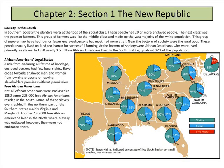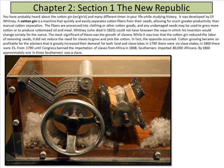The Cotton Gin by Eli Whitney: the cotton gin is a machine that quickly and easily separates cotton fibers from their seeds, allowing for much greater productivity than manual cotton separation. The fibers are processed into clothing and other cotton goods, and any undamaged seeds may be used to grow more cotton or produce cotton oil and meal.